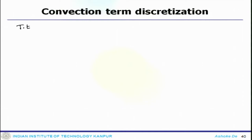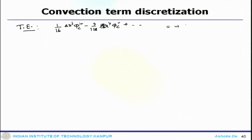Welcome back to the lecture series on finite volume and the QUICK scheme. If you analyze the truncation error, it turns out to be (1/6)Δx³ minus (3/128)Δx⁴ φ_C5 and so on, which essentially gives some sort of third-order accuracy. This is a third-order accurate scheme. As we move along the hierarchical direction, second-order upwind was second-order accurate, and QUICK becomes third-order accurate.